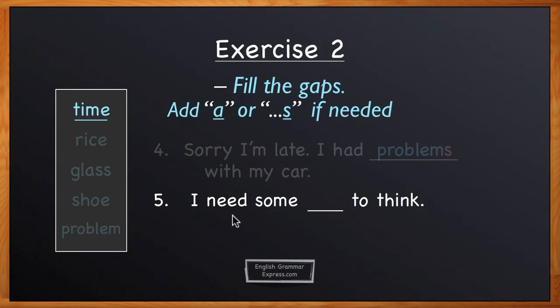In this sentence, the sense is uncountable. We're not thinking about one time, two times, or three times. So the full sentence should be: I need some time to think, no article and no plural because time in this sense is being used in the uncountable form.